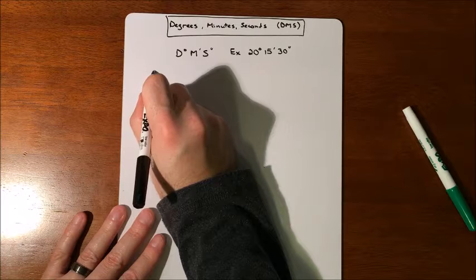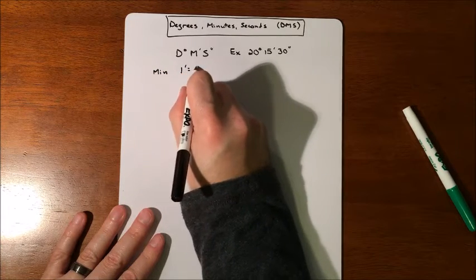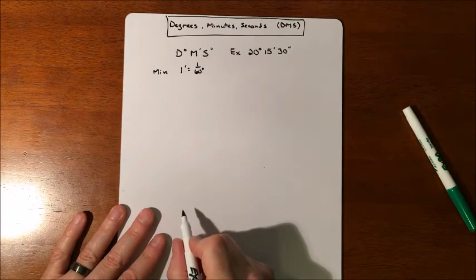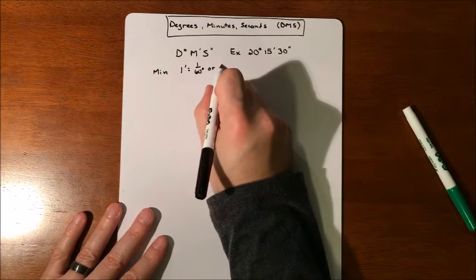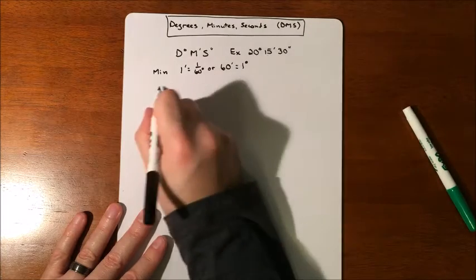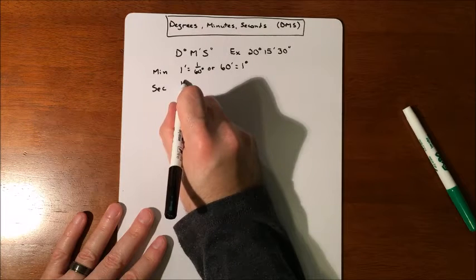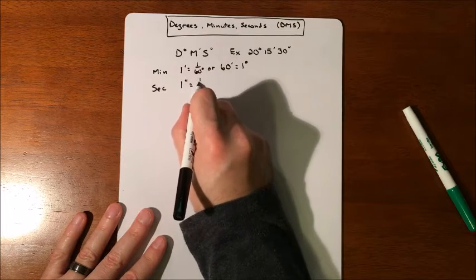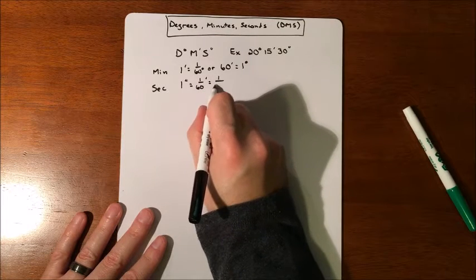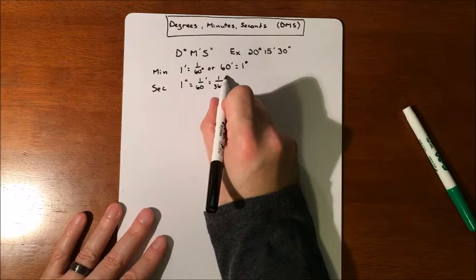So some of the basics to this are your minute. Your one minute is 1/60th of a degree, just like 1/60th of an hour. Or 60 minutes is equivalent to one degree. Your seconds breaks up just like you normally would think. One second is 1/60th of a minute or 1/3600th of a degree.